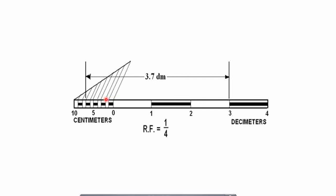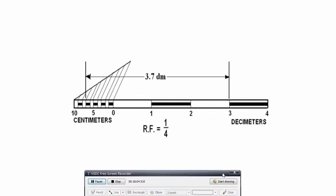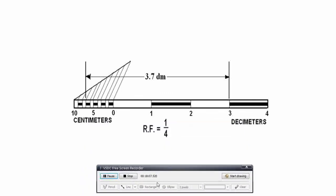Count 1, 2, 3, 4, 5, 6, 7 — so this point is 7 centimeters. The distance from here to here represents 3.7 decimeters. The lines drawn at 45 degrees may be drawn or skipped; they are not much needed for a plane scale. This is all about plane scales. In the next lecture, we will see how to draw diagonal scales and then vernier scales.